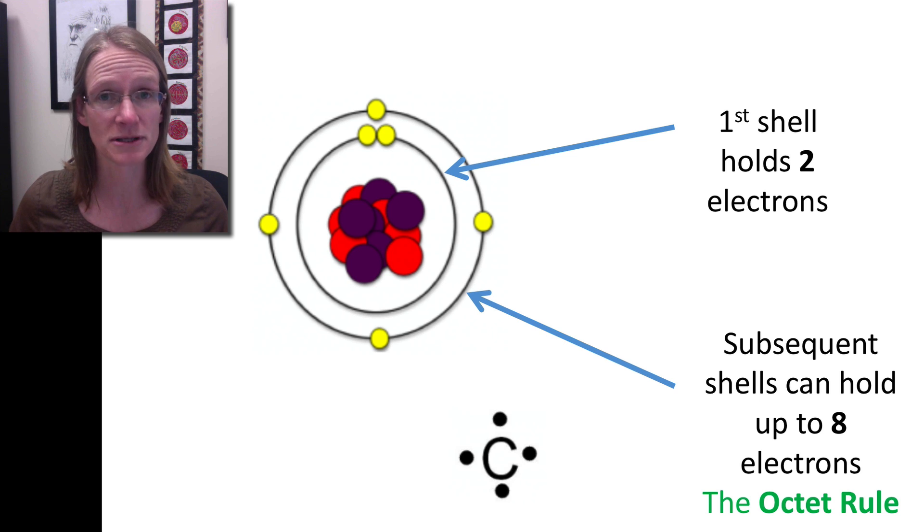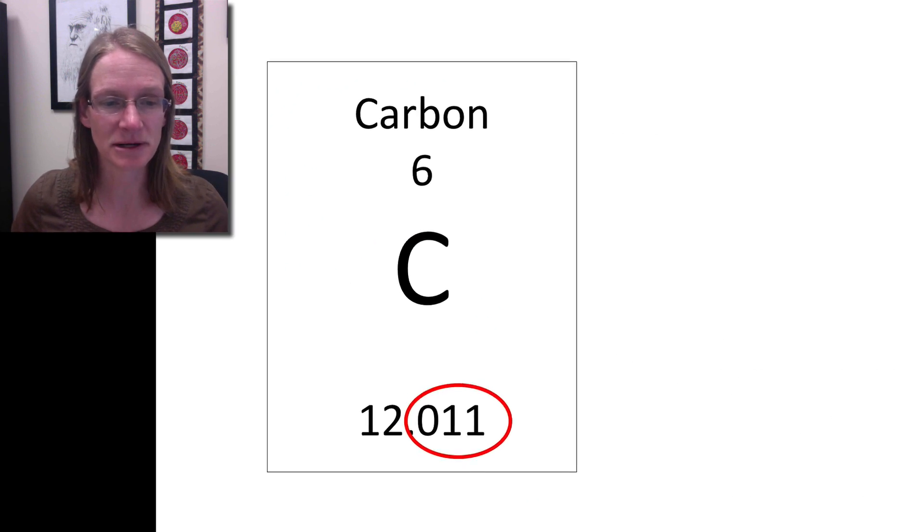These Lewis structures always show the number of electrons in the outermost shell because those are the ones that tend to be the most important. We'll talk more about those in a little bit.